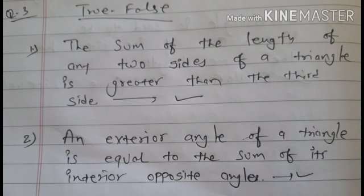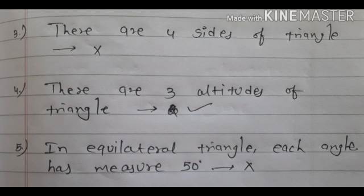True or False. First: The sum of the lengths of any two sides of a triangle is greater than the third side — True, हमने triangle की property में देखा था. Second: Exterior angle of a triangle is equal to the sum of its interior opposite angles — True. Third: There are four sides of a triangle — False, तीन sides होती हैं. Fourth: There are three altitudes of a triangle — True. Fifth: In an equilateral triangle each angle has measure 50 degrees — False, each angle is 60 degrees. So dear students, here we complete chapter number 6. From next lesson, we will start a new chapter. Thank you.